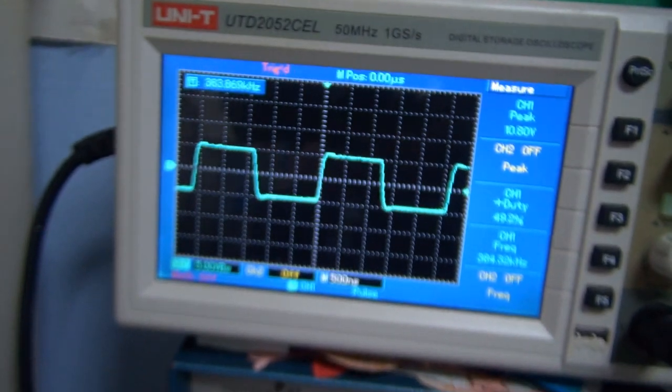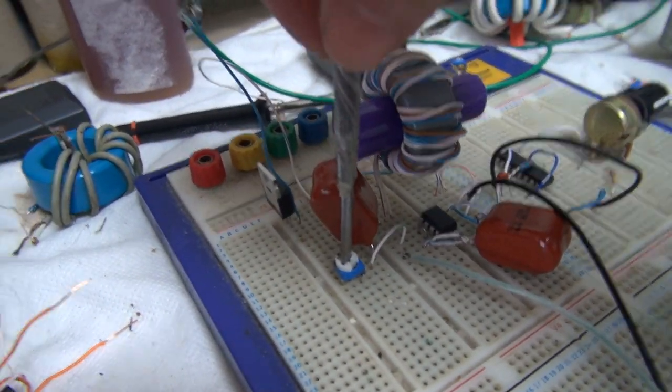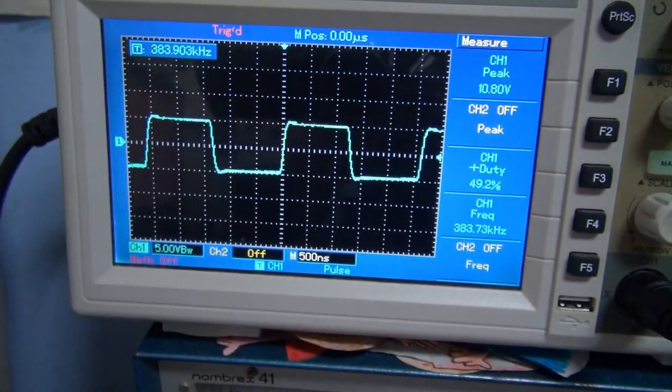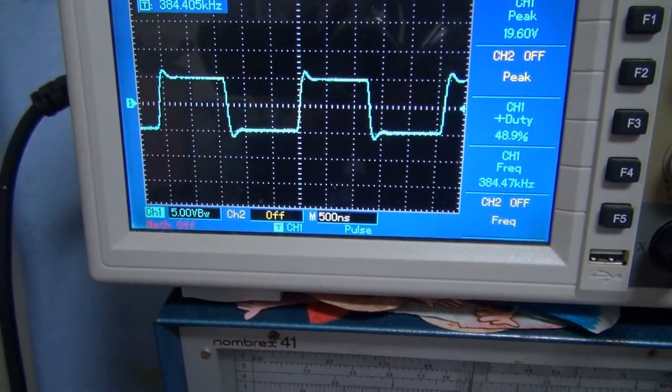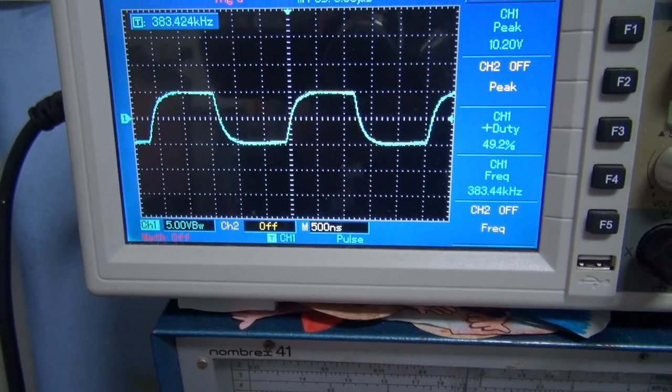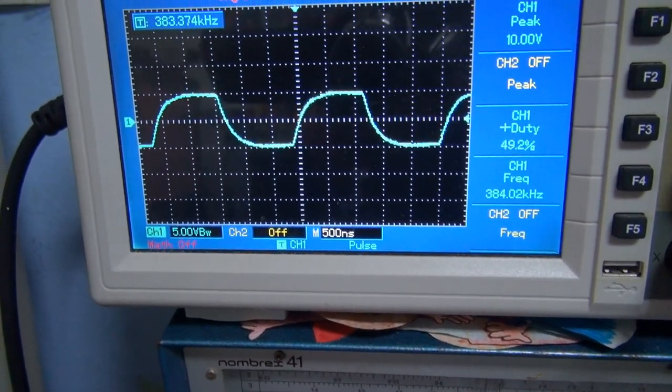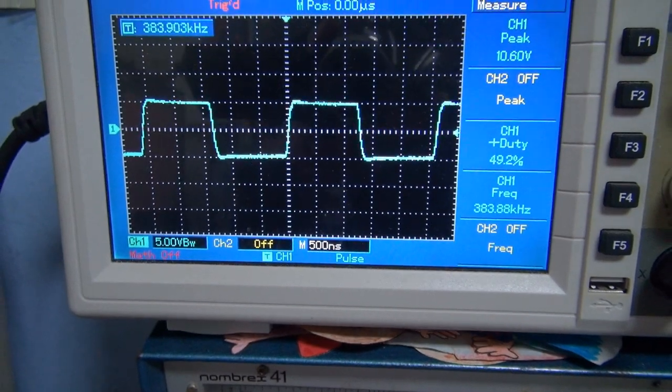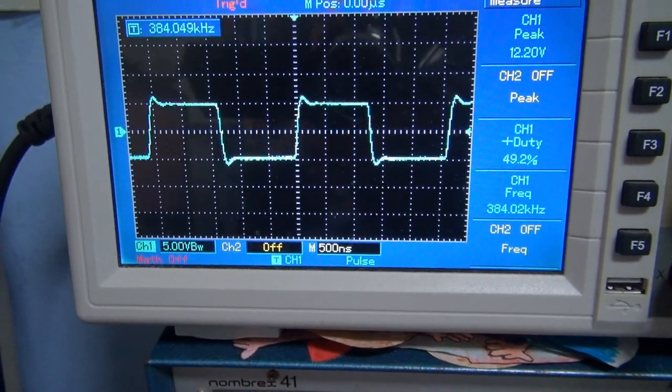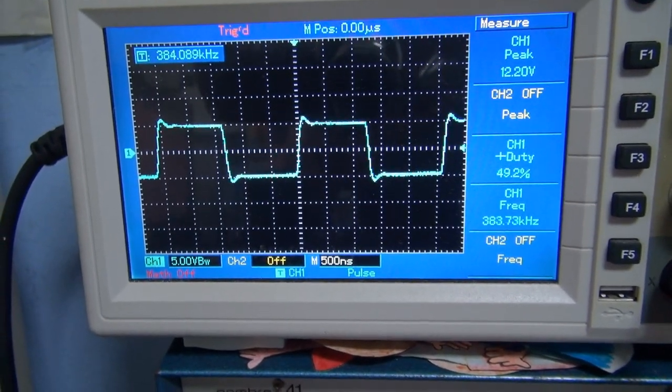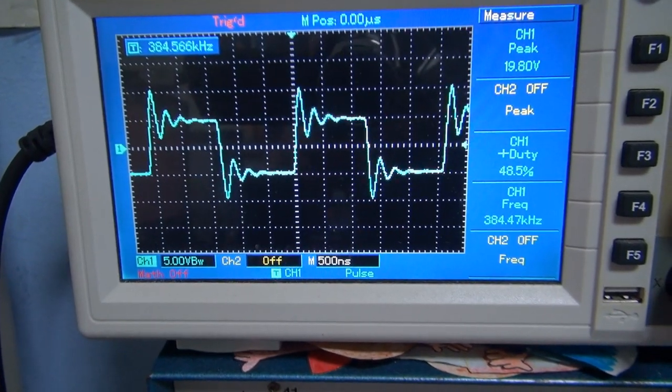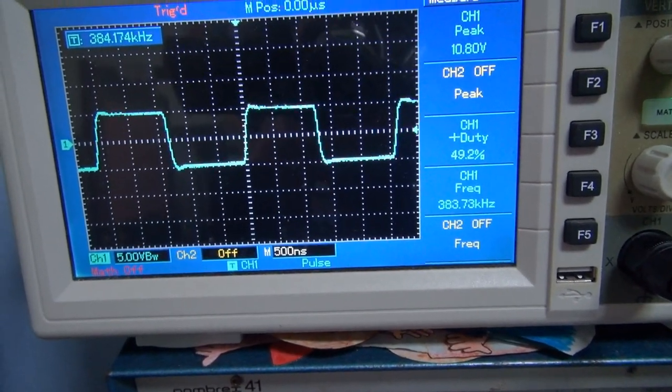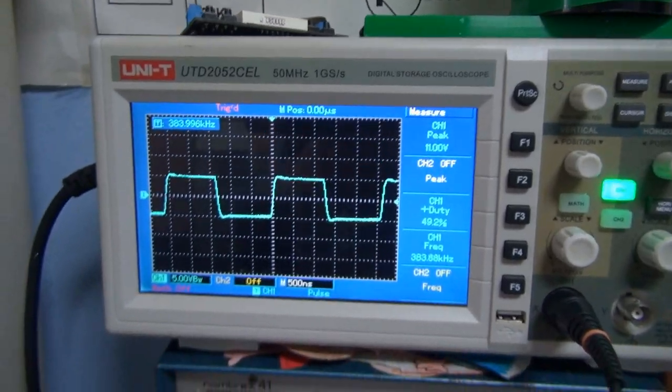So as you can see we've got a nice clean square wave and as I adjust this we're going into the gate drive transformer you can see we can go between really crappy slopey waveforms, nice square wave waveforms, square wave with a little bit of overshoot, and completely ringing like a bell.